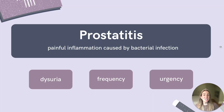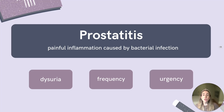So let's first discuss prostatitis. This is a condition that occurs due to edema of the prostate gland caused by a local bacterial infection. Some presenting symptoms may include pain in the groin, dysuria, frequency, urgency, and sometimes even flu-like symptoms. A digital rectal exam, or DRE, may reveal a warm, boggy, or even a tender prostate — all of which are reminders of infection and inflammation.